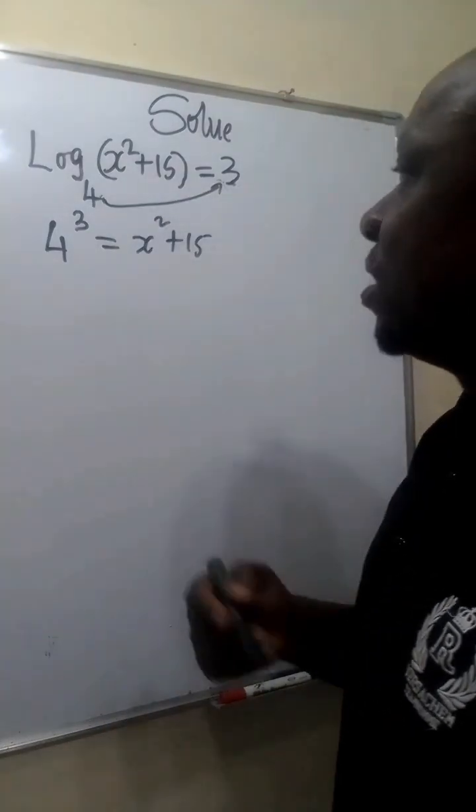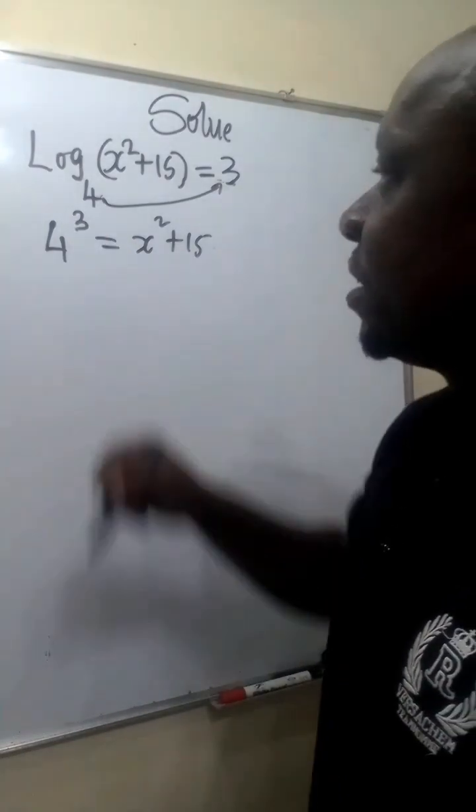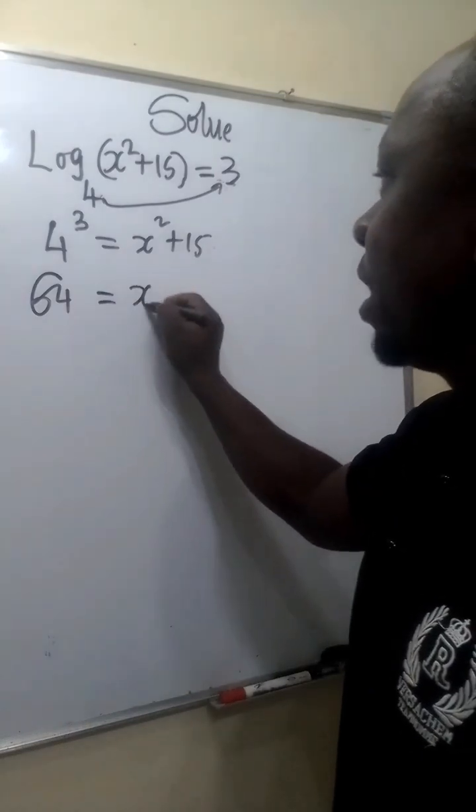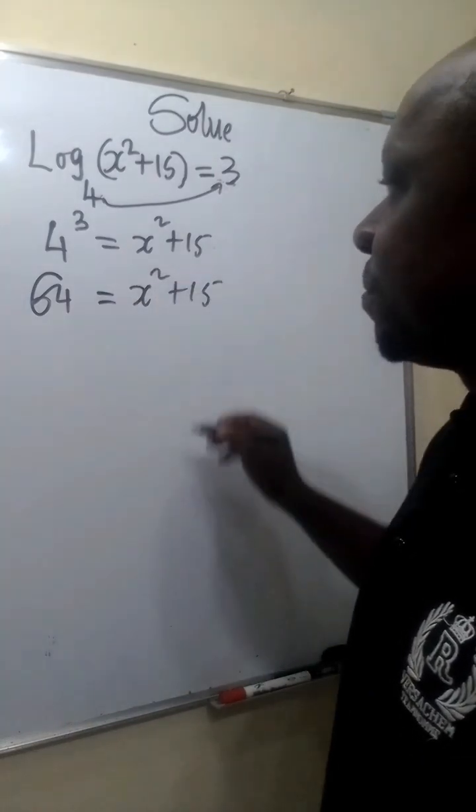4 is raised to the power of 3. 4 raised to power 3 is the same as 64. That is 4 times 4 times 4 equals x squared plus 15.